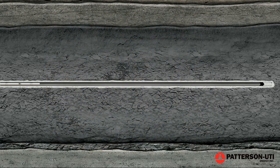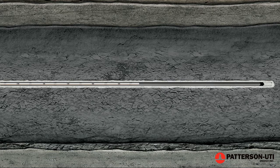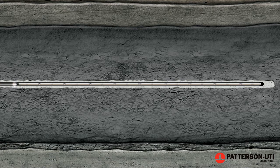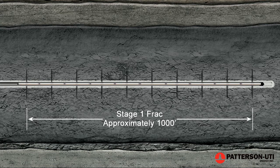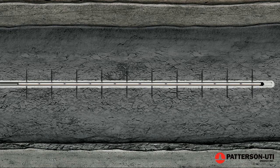A perforating gun is lowered by wire line into the casing to the targeted section of the horizontal leg. An electrical current is sent down the wire line to the perf gun and sets off a charge that shoots small holes through the casing and cement and out a short distance into the shale formation. The perf gun is then pulled out of the hole.